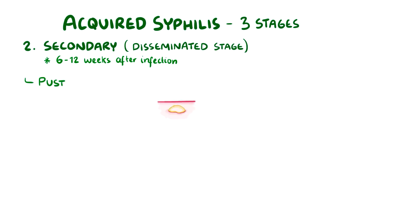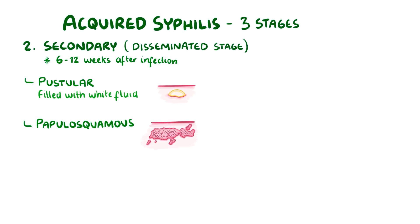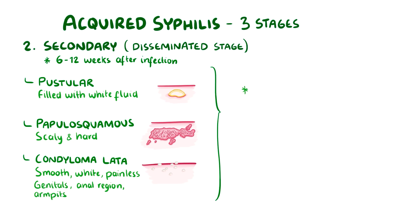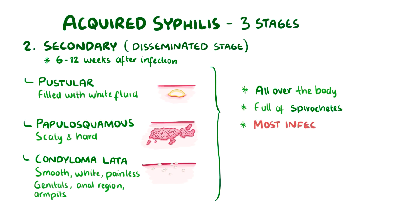These rashes can sometimes be pustular, which means they're filled with pus, or they can be papulosquamous, which is when they're really scaly and hard. In addition, there can be something called condylomata lata, which are smooth, white, painless, wart-like lesions, and they appear on moist areas like the genitals, around the anal region, and in the armpits. These various rashes can erupt all over the body, and the lesions are chock full of spirochetes, making secondary syphilis the most infectious stage. The rashes from secondary syphilis usually resolve within a few weeks to months.